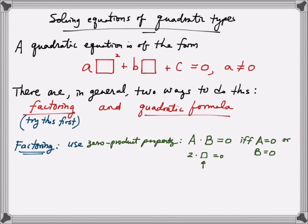When we factor a quadratic equation, our goal is to turn it into a product of two linear factors. By using the zero product property, we set each factor equal to zero and solve accordingly. For example, let's consider factoring 6x² + x = 12. The first task is to set this equal to zero, giving us 6x² + x - 12 = 0.